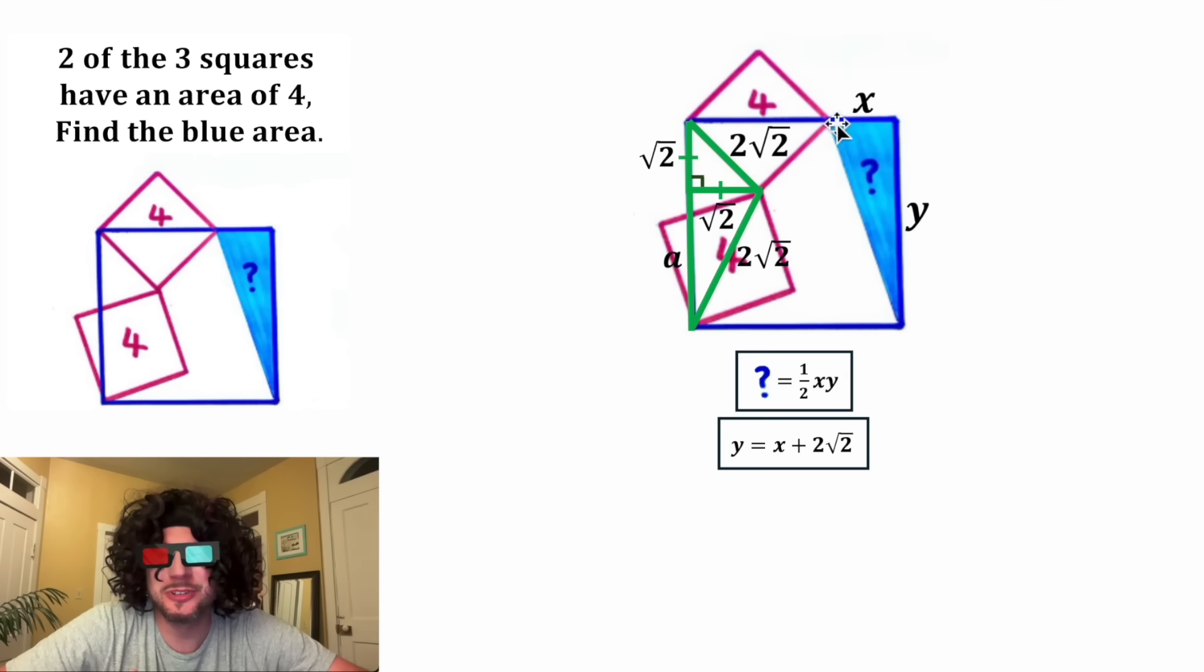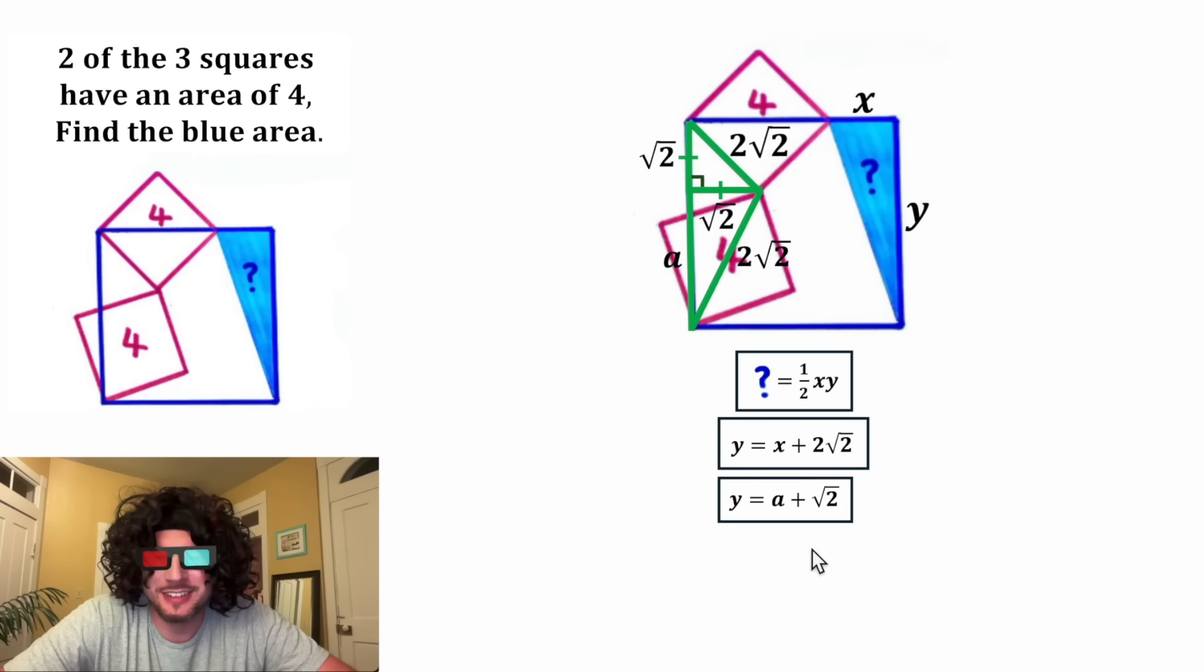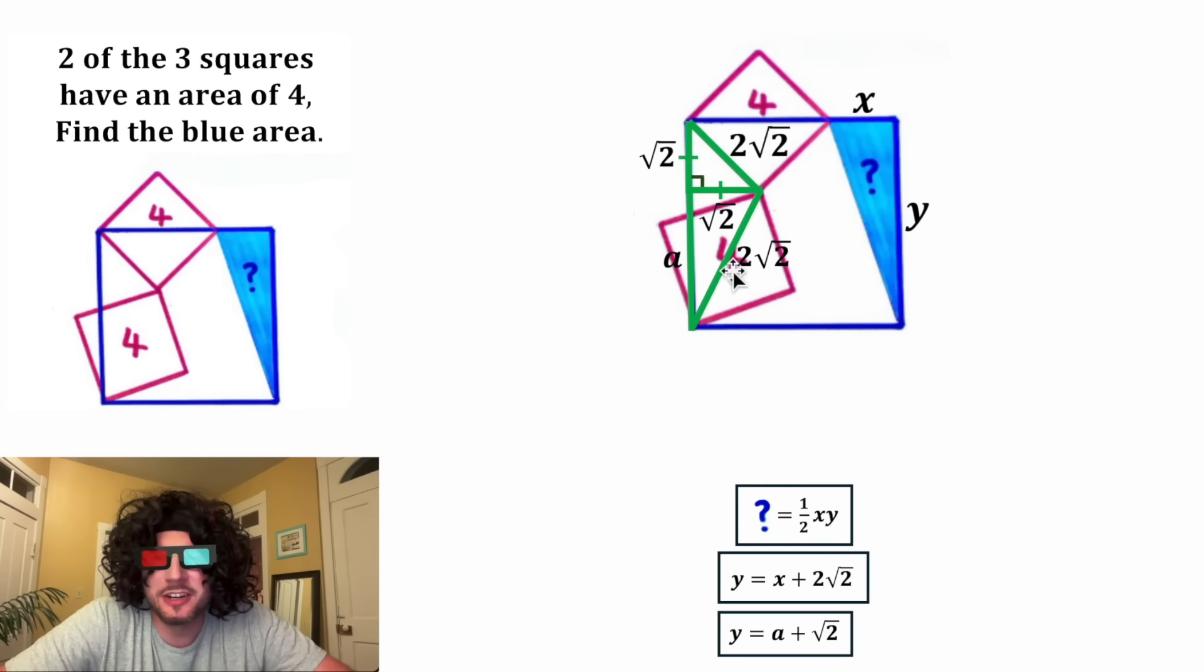a plus root two is a side of our blue square. So we can say Y is equal to a plus square root of two. And this also looks important. Let's put a box around it. Then let's move it down here. Because up here, we want to do this Pythagorean theorem. It'll be root two squared plus a squared equals the quantity two root two squared.